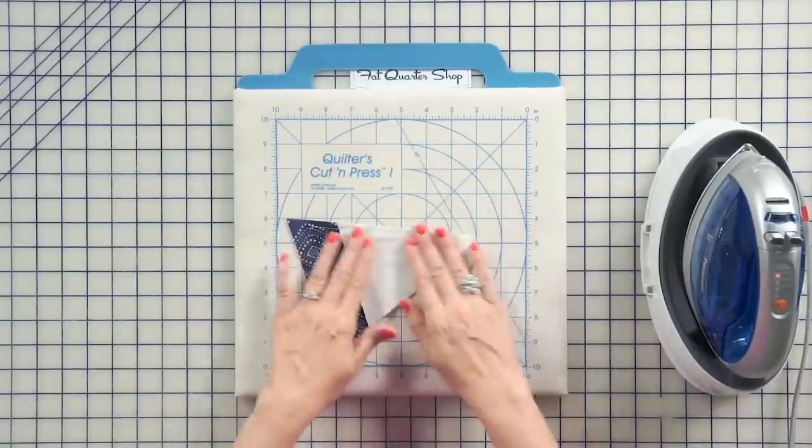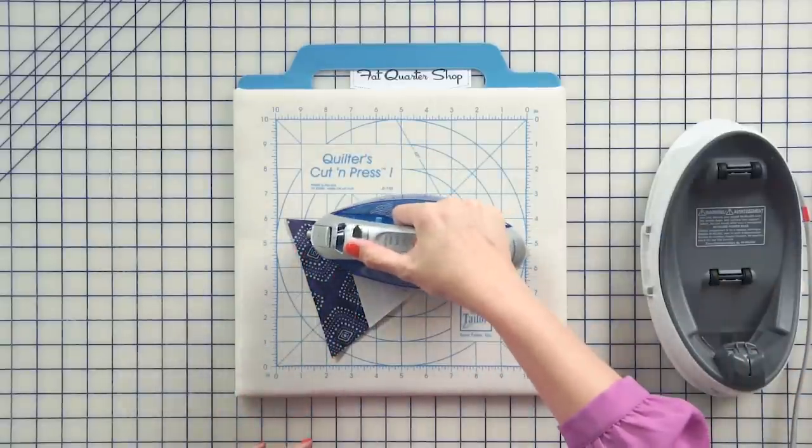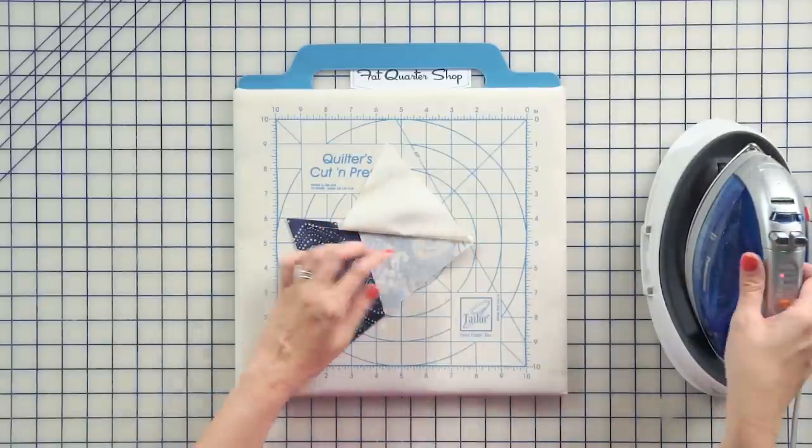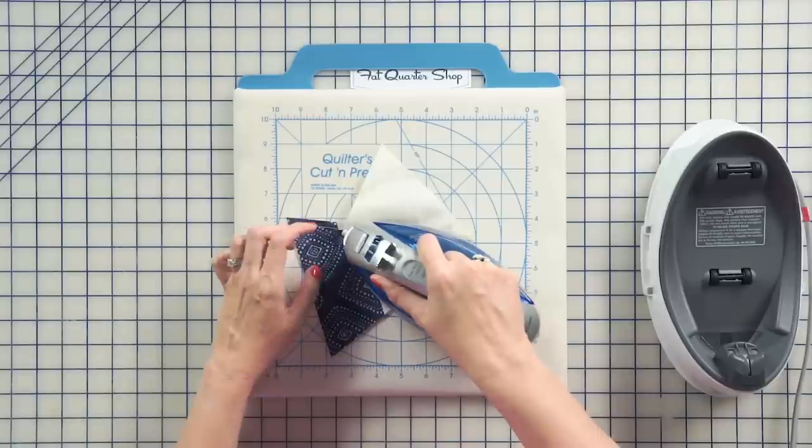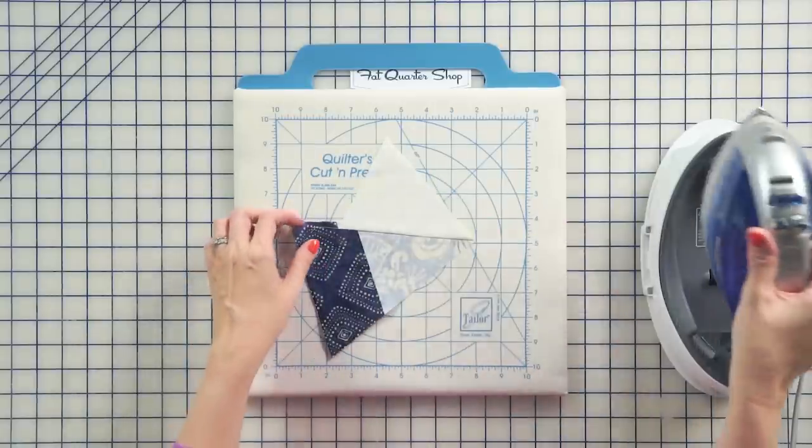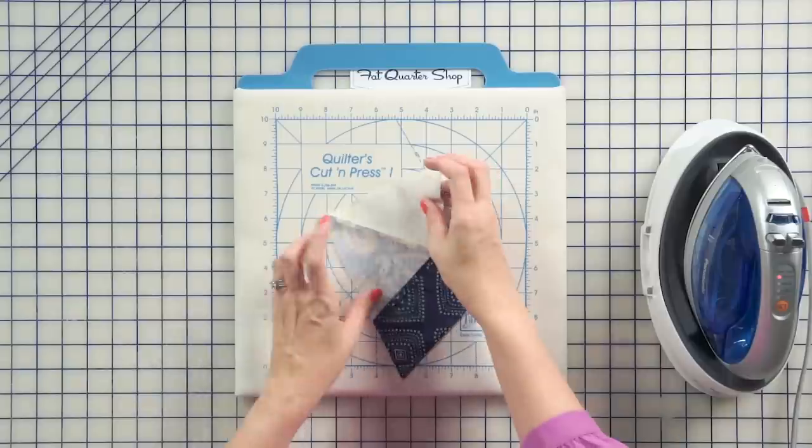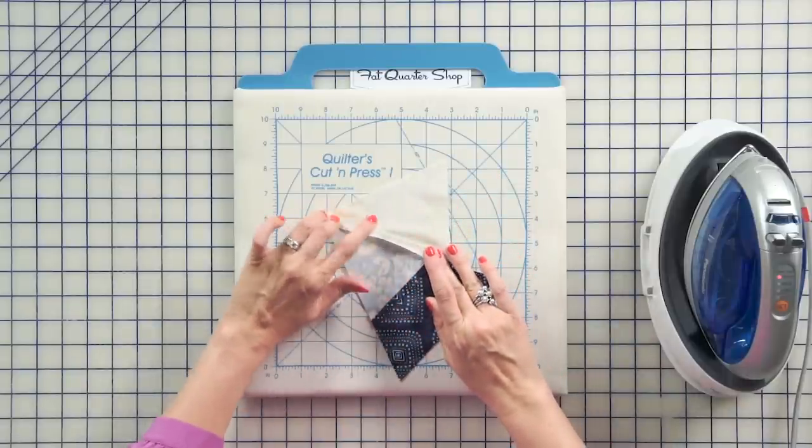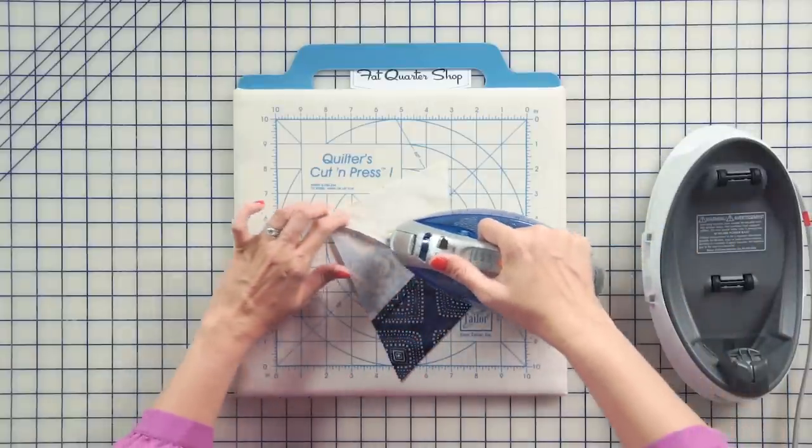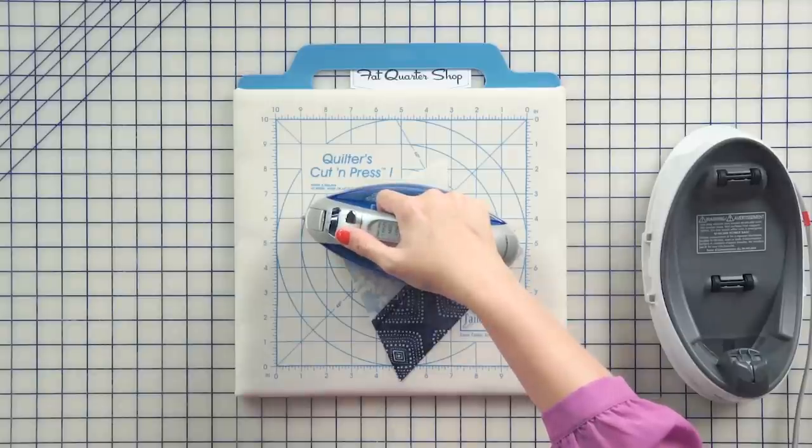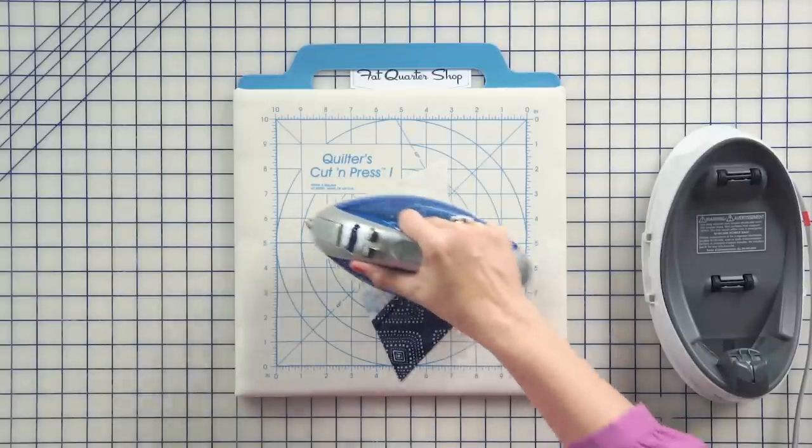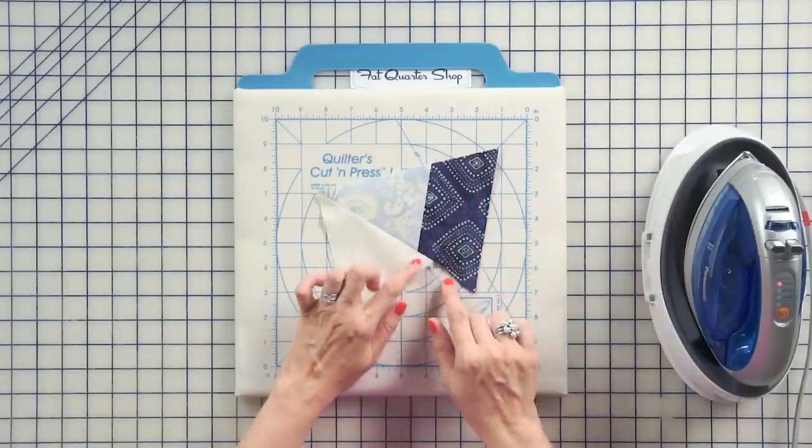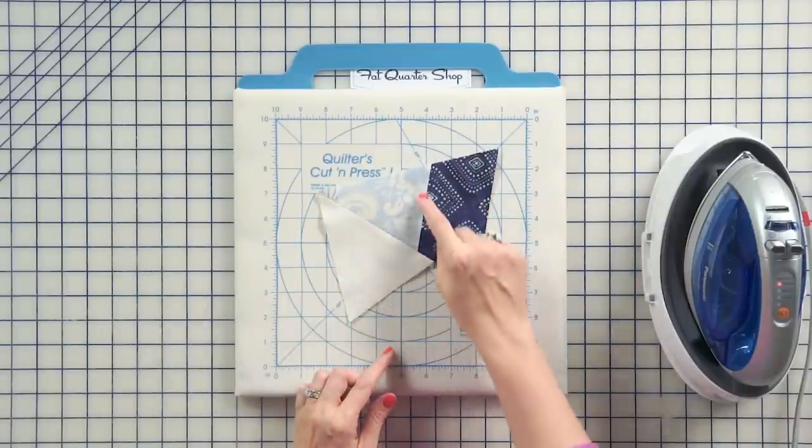So now we're going to press our seam and set it. Then I'm gonna press to one side. And now we're gonna press it open. So when I press open, I usually press to one side, finger press, and then just press. And when you're working with bias seams, you don't wanna move your iron a lot. Just a little bit. So that's nice and flat. And you're gonna see this funny thing going on right here. You're just gonna ignore that because, again, we're gonna be trimming the block down.